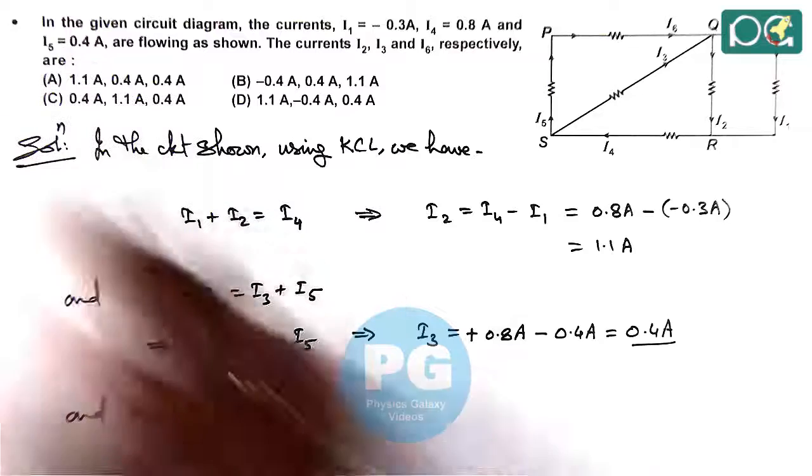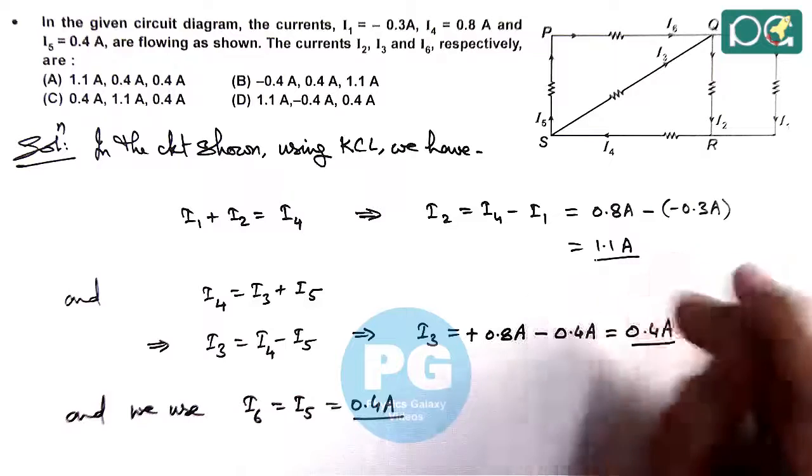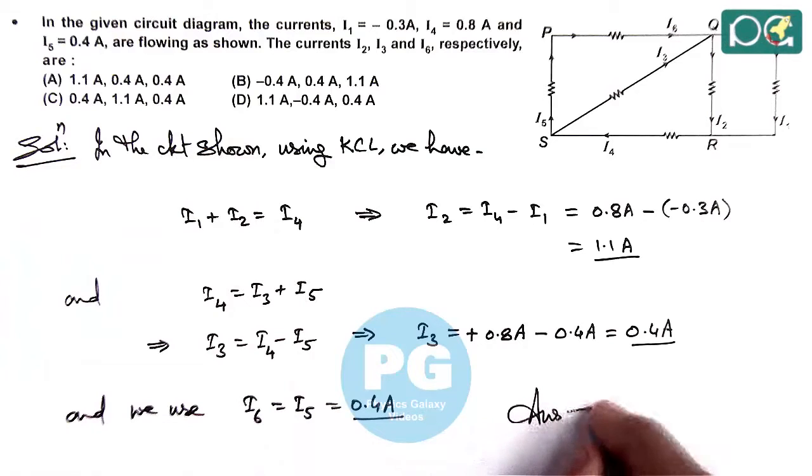The value of i5 is 0.4 ampere. So all the three currents we have obtained: 1.1, 0.4 and 0.4. So answer matches here with option A.